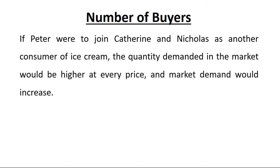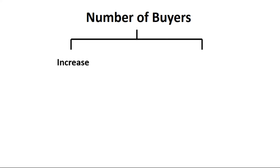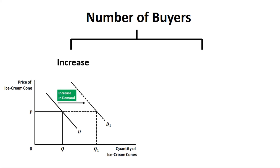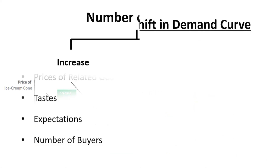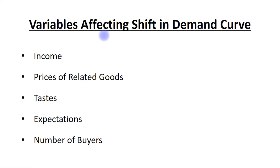The next variable is number of buyers. If Peter were to join Catherine and Nicholas as another consumer of ice cream, the quantity demanded in the market would be higher at every price and market demand would increase. In simple words, if number of buyers increases then total market demand will also be increased, and if number of buyers decreases then the total market demand will also be reduced. So we have covered all variables affecting shift in demand curve: income, price of related goods, taste and preference of consumer, expectations, and number of buyers.